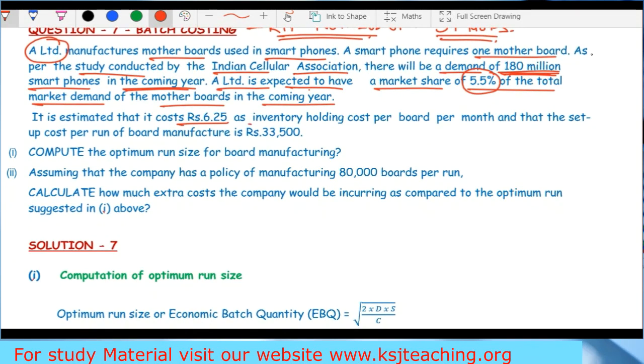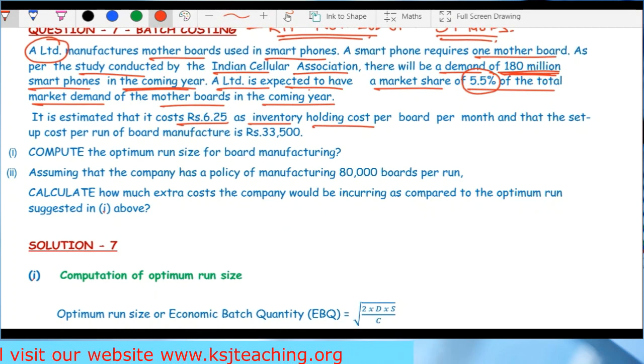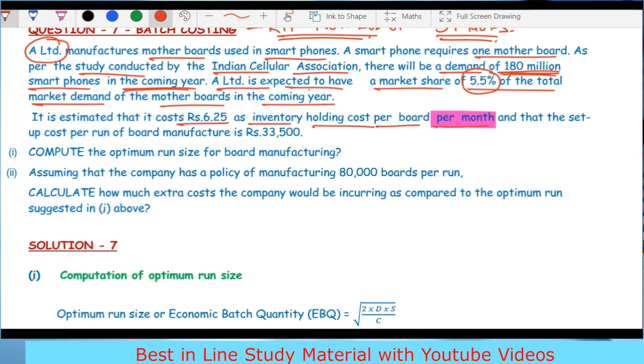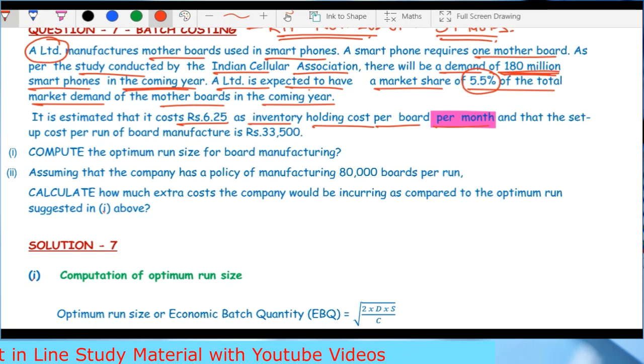It is estimated that it costs Rs 6.25 as inventory holding cost per board per month. This is very important - the holding cost is usually given per unit per annum, but here it's given per board per month. Don't make a mistake here, and 99.9% of students will make this mistake.